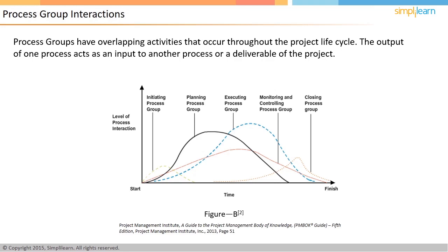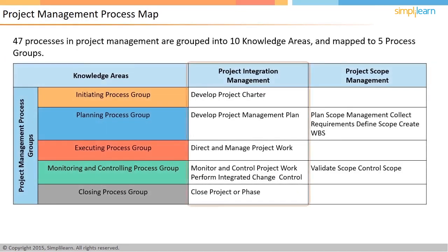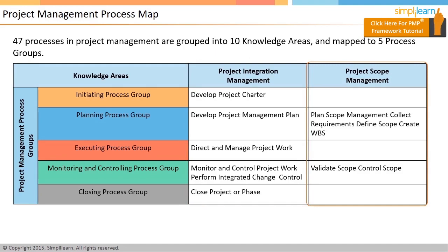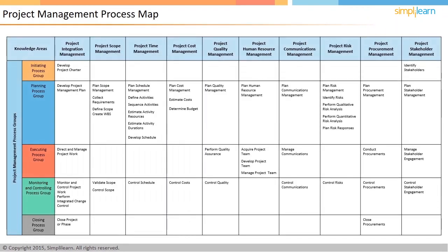We will now discuss the project management process group, knowledge area, and project management process mapping. Given on the screen is the list of 47 project management processes, 10 knowledge areas, and 5 process groups. The table shows how each of them is interrelated. You can see that the project integration management processes can be mapped back to all 5 process groups, while project scope management processes are mapped back to only the planning and monitoring process groups. Study the table to identify processes under project management and the knowledge area they belong to. All 47 processes are described in detail in this tutorial, and each knowledge area is covered in detail as a lesson. It also covers how the processes map to process groups, as well as the inputs, outputs, tools, and techniques used in each process.